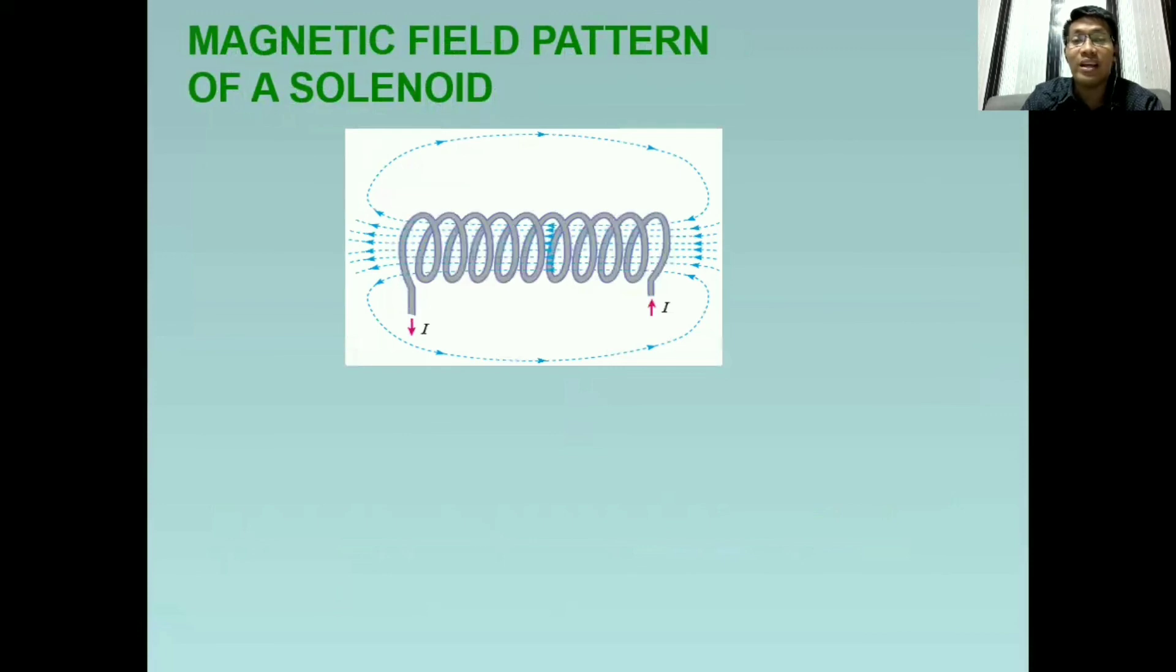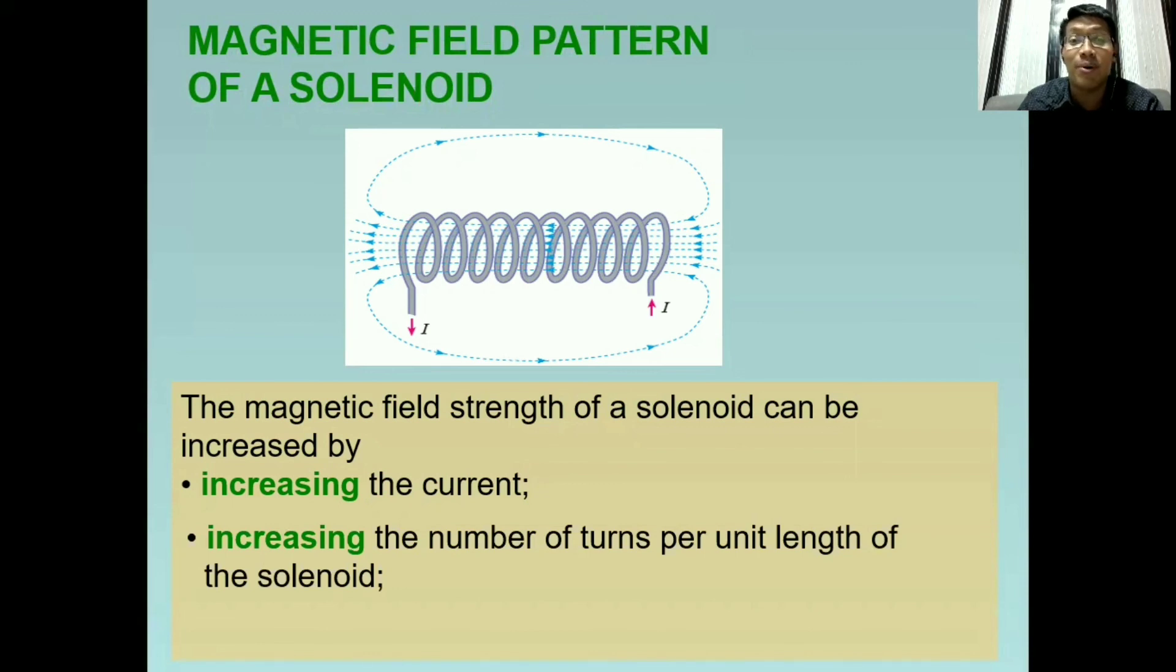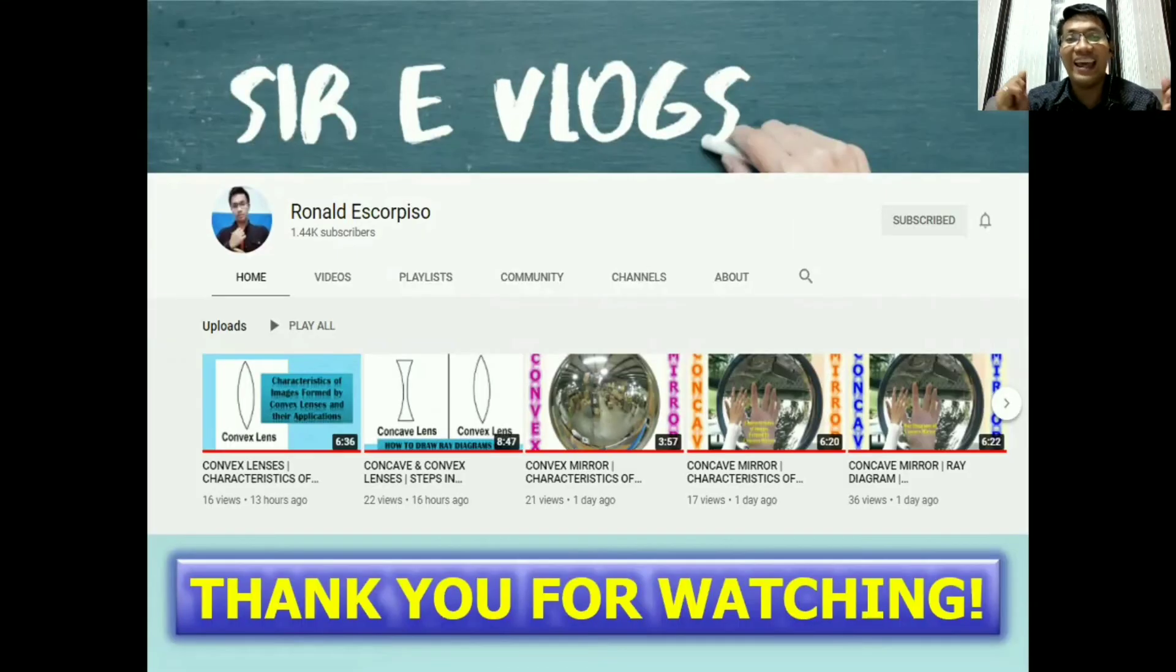This time, how can we increase the magnetic field in a solenoid? So we have several ways. So the first one is still increasing the current. Second, we can also increase the number of turns per unit length of the solenoid. So the more turns we have, the stronger the magnetic field, just like the coil. However, in the solenoid, we have the third thing or step that we can do so that we can increase the magnetism. And that is the use of soft iron core, which is placed within the solenoid.